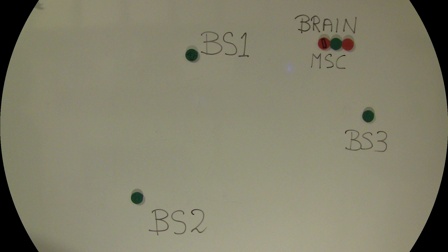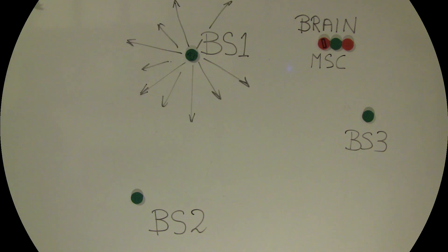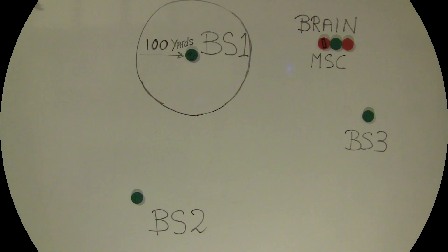MSC is the Mobile Switching Center. The brain wants to know your exact location and commands base station one to send the 'where are you' signal. Your smartphone replies, and now the brain knows you are somewhere on the 100 yards circle.